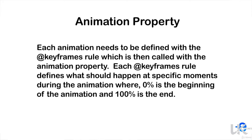Each animation needs to be defined with the keyframe rule, which is then called with the animation property. Each keyframe rule defines what should happen at a specific moment during the animation, where zero percent is the beginning of the animation and hundred percent is the end.